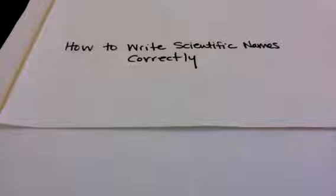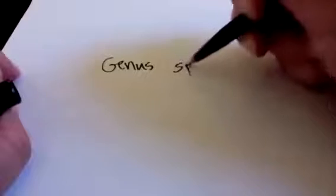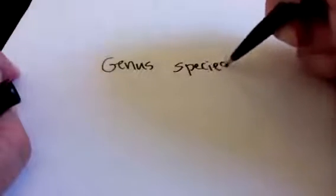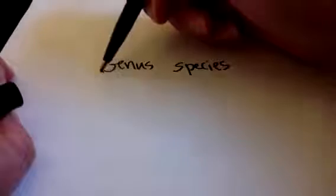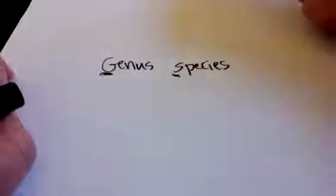When we write a scientific name, we always have two parts to the name: the genus and the species. We always capitalize the genus and write the species in lowercase.